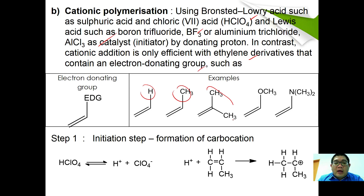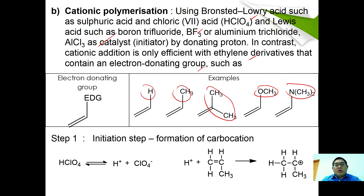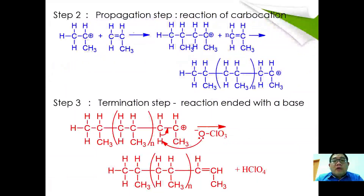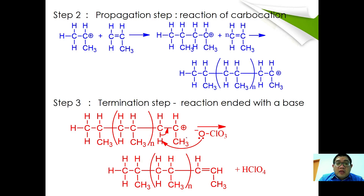Electron-donating groups include hydrogen, methyl, isopropyl, ethylene, and amine. In the mechanism for cationic polymerization, the Brønsted-Lowry acid donates the proton, which attacks the C=C bond, and a proton transfer takes place to form a carbocation. The carbocation then propagates to other monomers, and termination occurs by adding the base back — for example ClO₄⁻ — where deprotonation takes place, yielding the final polymer.